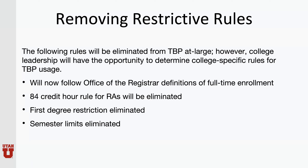We are eliminating the 84 credit hour rule for RAs. We are eliminating the first year or first degree restriction, which currently means that if a student has a master's degree already, they do not qualify to be supported on tuition benefit in a master's degree program. Similarly with doctoral programs, if a student has a clinical doctorate like an MD or a DPT and they are pursuing a PhD program, currently they are not eligible because they already have a doctorate. That restriction will be eliminated starting fall 2024.